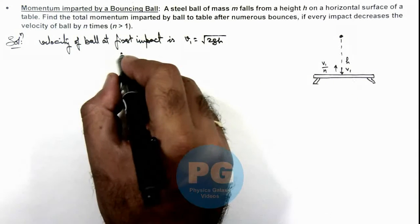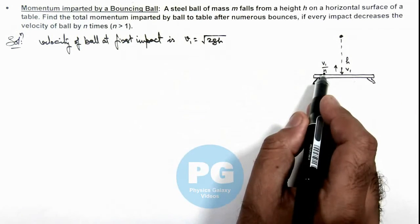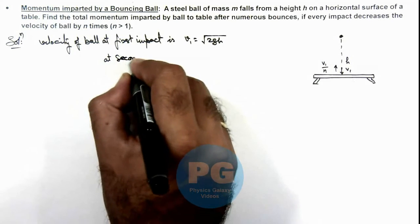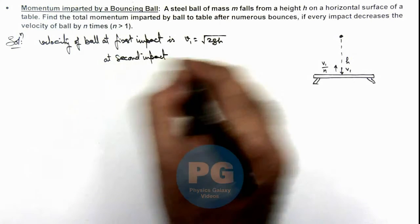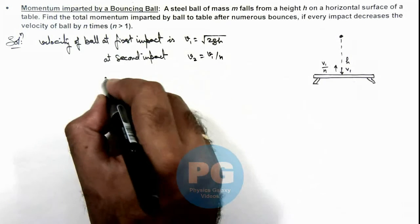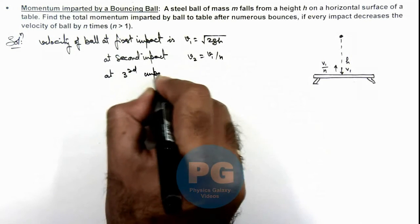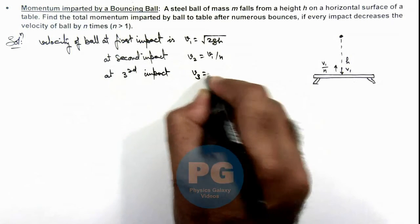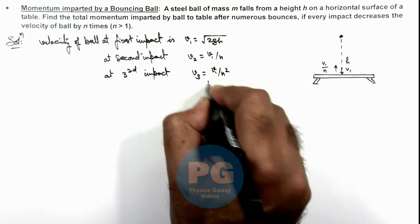When it rebounds its velocity becomes v1/n. So we can calculate at second impact: the velocity v2 can be written as v1/n. And similarly, at third impact, v3 = v2/n, so we can write it as v1/n², and so on.